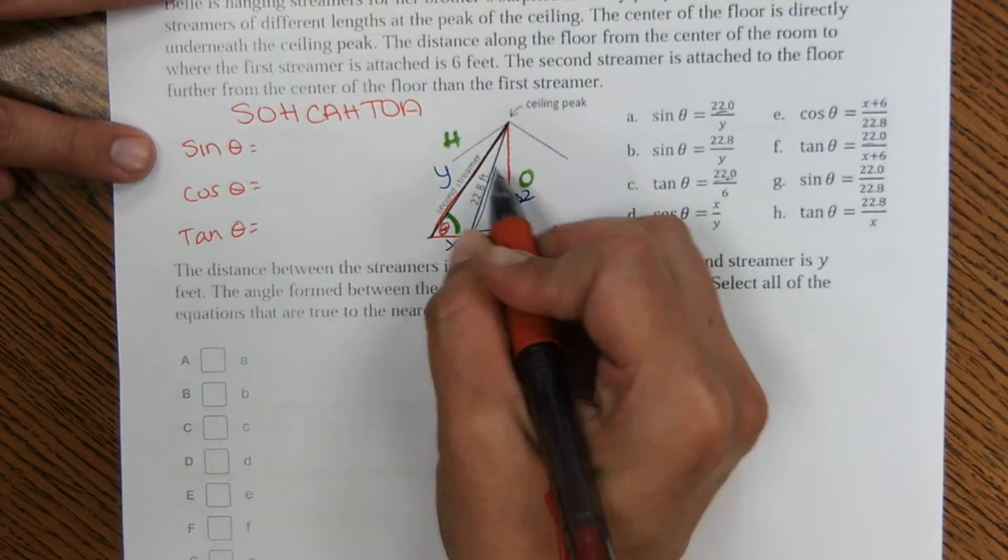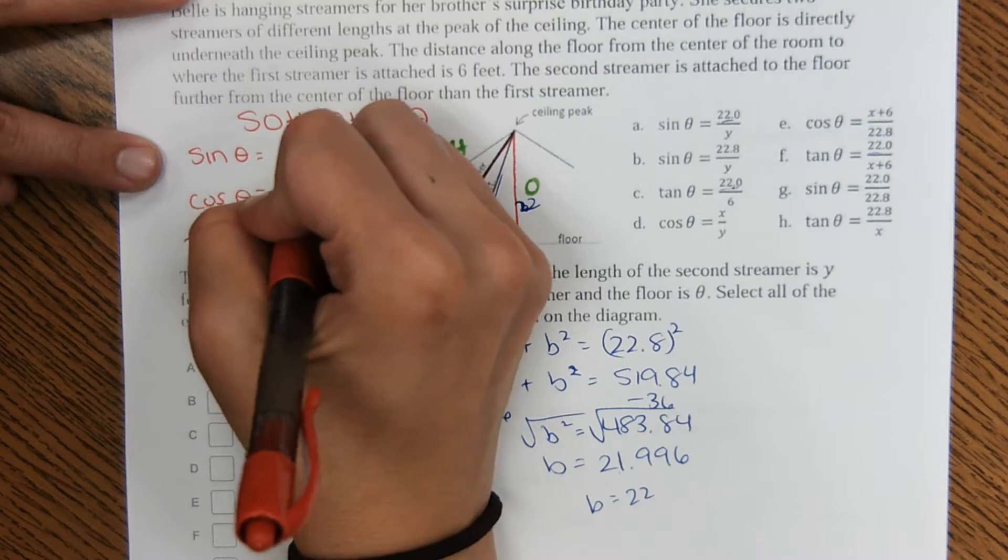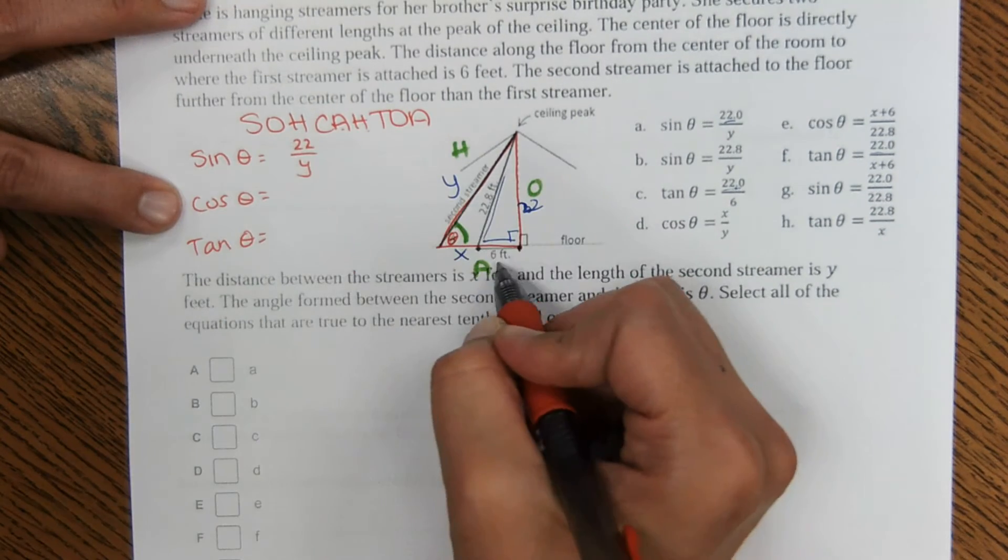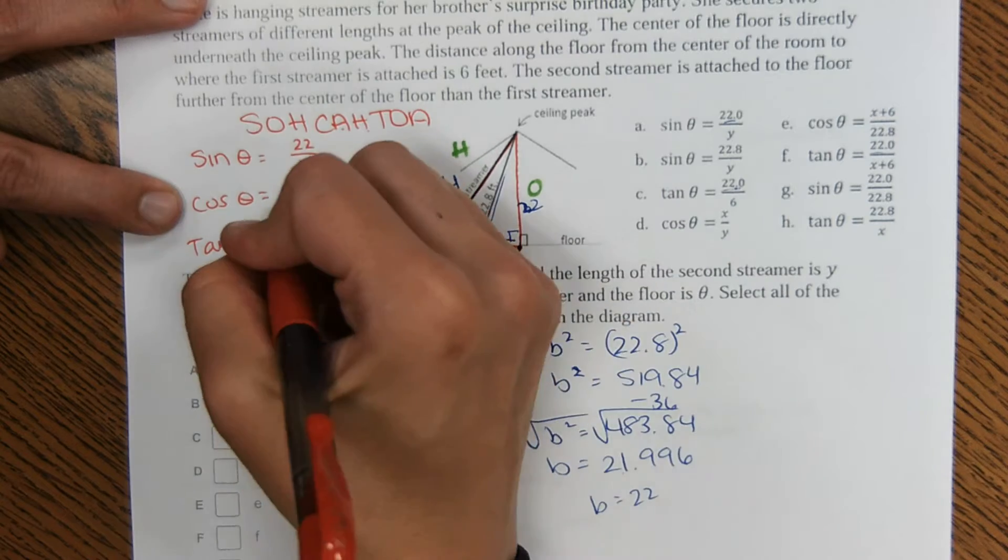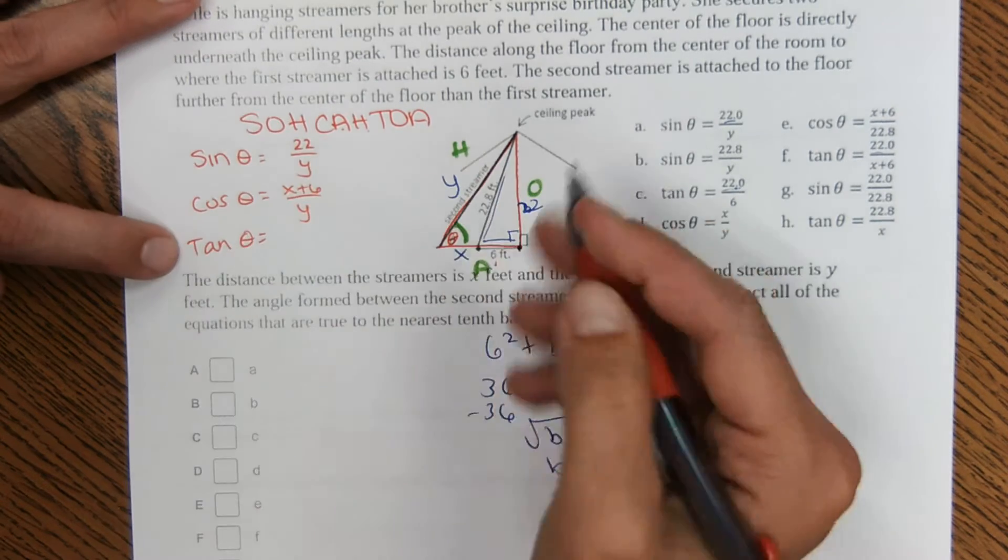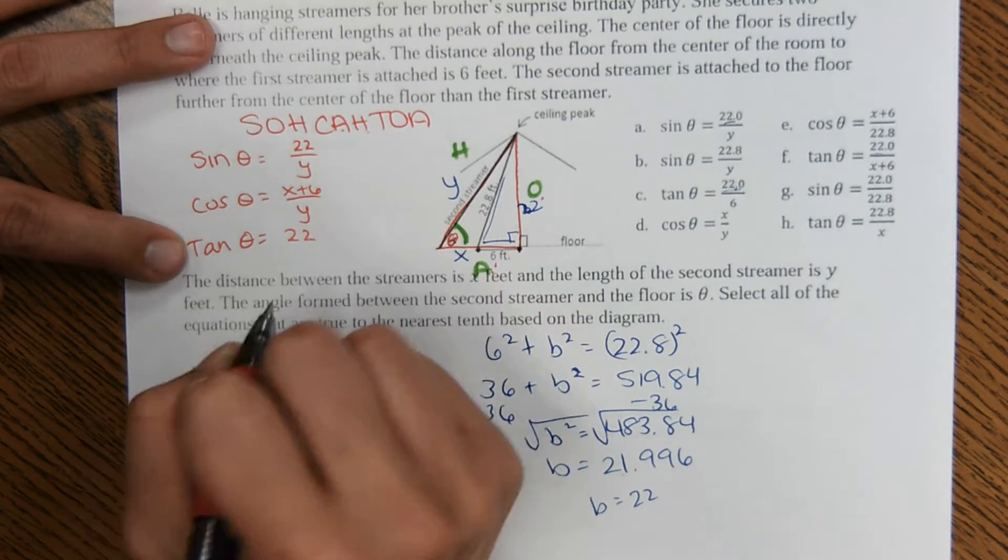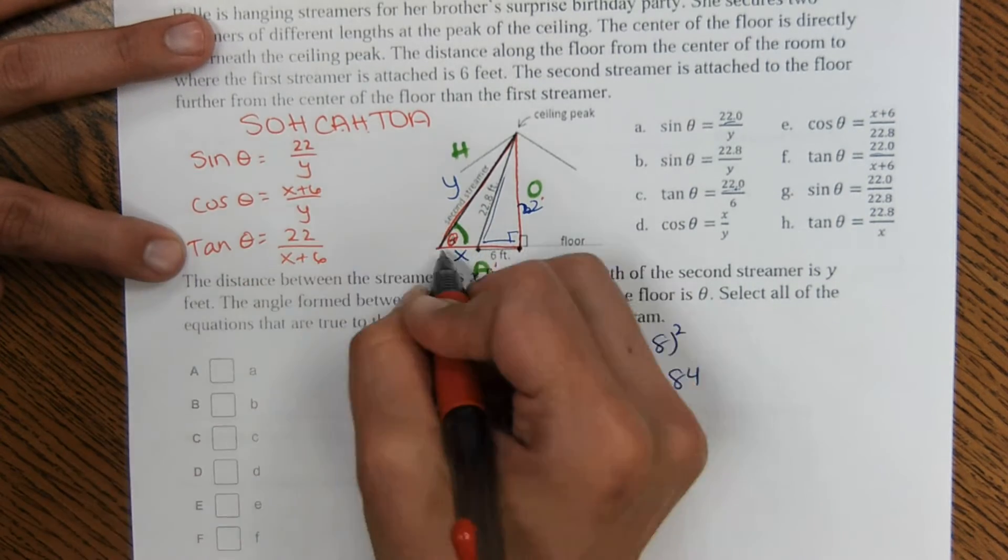So sine of theta, opposite over hypotenuse, 22 over y. Cosine, adjacent over hypotenuse, so it would be x plus 6 over y. And then tangent here, opposite over adjacent, 22 over x plus 6.